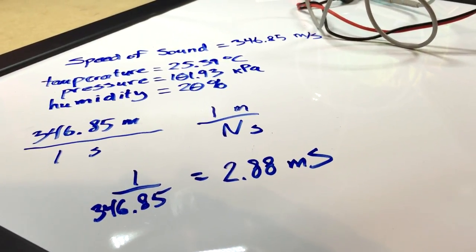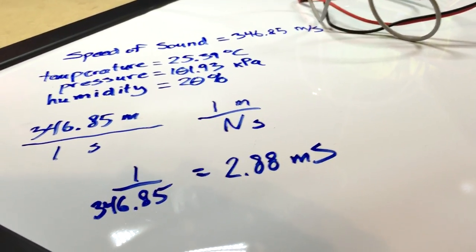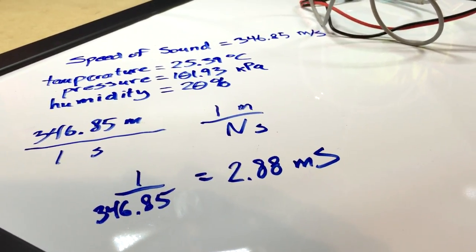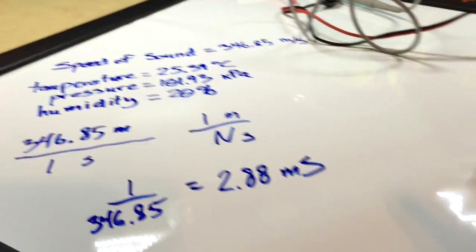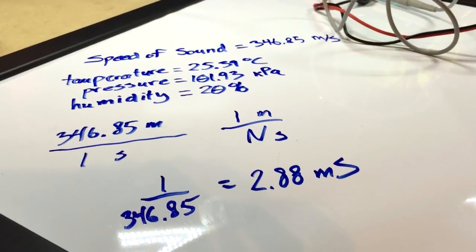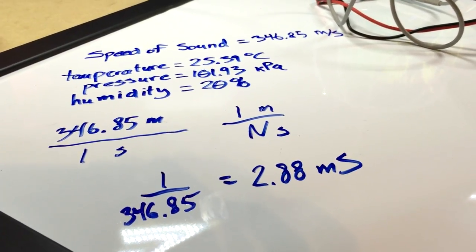The way he did it, he used a function generator and hooked it up to a speaker, then put a microphone at the other end of his workbench. I think he started with one meter and realized that was a big enough distance to measure pretty accurately, which is what I replicated.